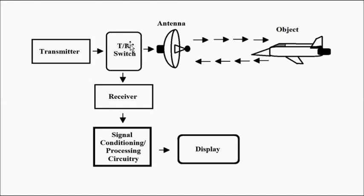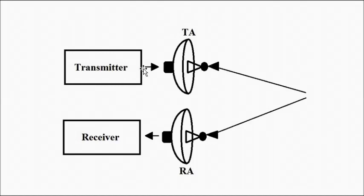The TR switch controls whether the antenna behaves as a transmitting antenna or a receiving antenna. In monostatic radar configuration, only one antenna is used, whereas in bi-static configuration, two antennas are used. One is connected to the transmitter block and only transmits the signal, whereas the other only receives.